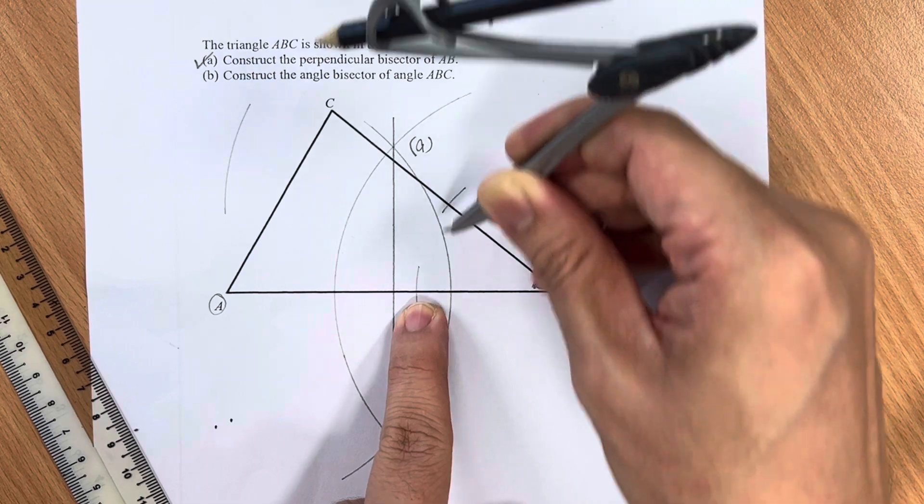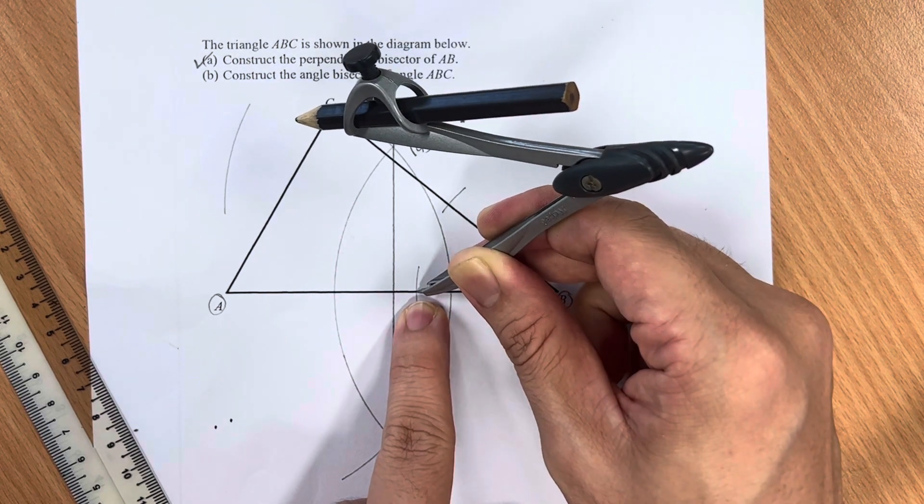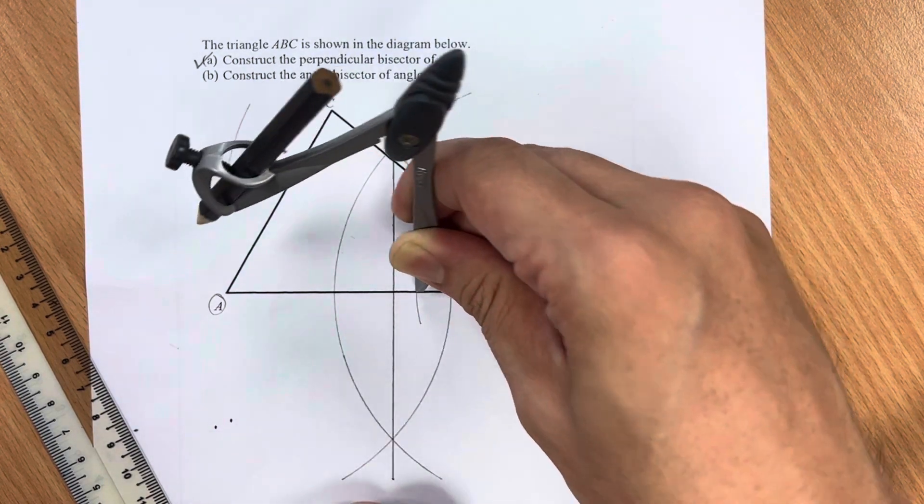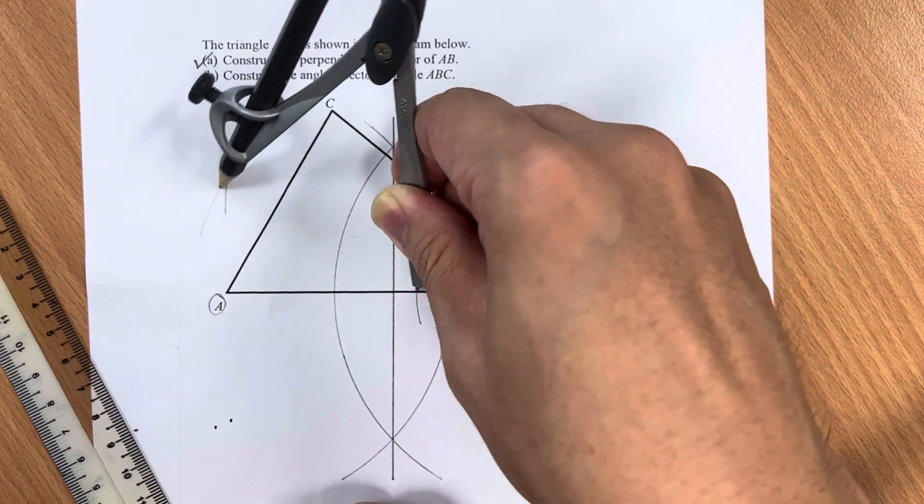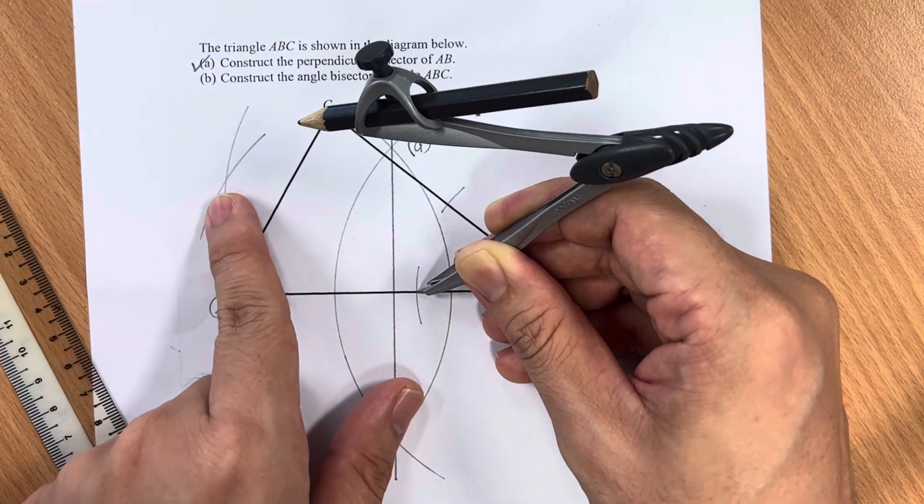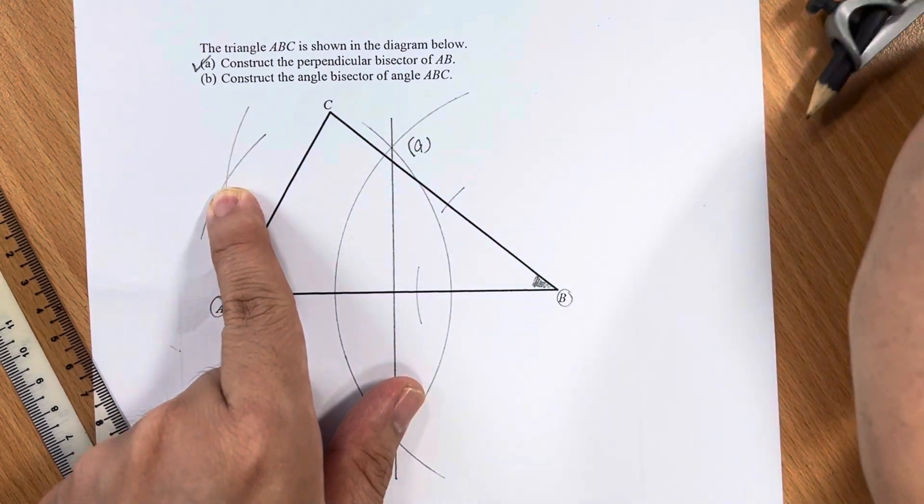Move the pointed tip to the other intersection as shown. Draw another arc and do make sure they intersect each other here.